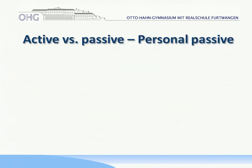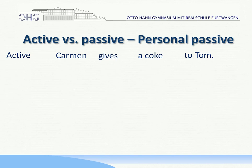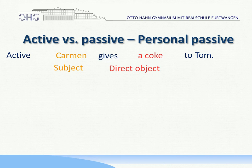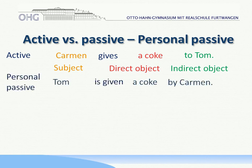Second point: personal passive. This is quite interesting. So if we have a look at this sentence in the active: Carmen gives a coke to Tom. Carmen is the subject, a coke is the direct object, and to Tom is the indirect object. That is important to know. So who or what does she give to whom? 'To whom' is always the question for the indirect object. Now the personal passive works like this.